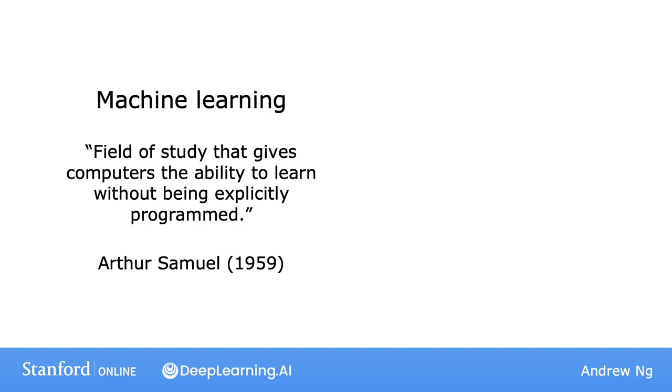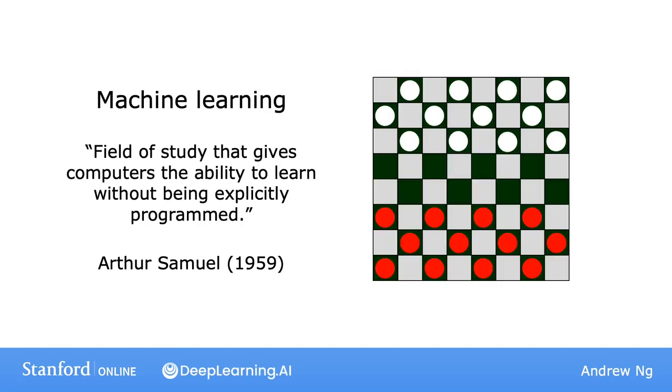Samuel's claim to fame was that back in the 1950s he wrote a checkers playing program. The amazing thing about this program was that Arthur Samuel himself wasn't a very good checkers player. He had the computer play tens of thousands of games against itself, and by watching what board positions tended to lead to wins and which led to losses, the checkers playing program learned over time to identify good and bad board positions.